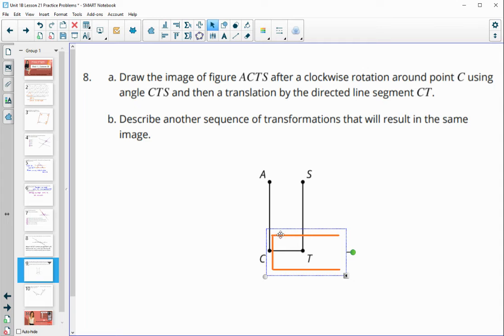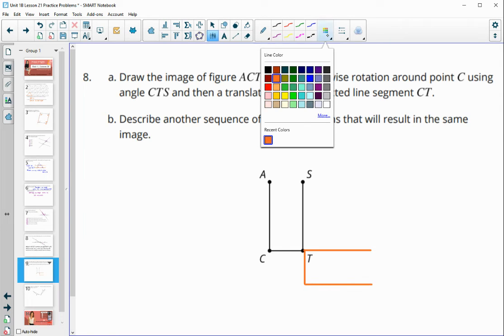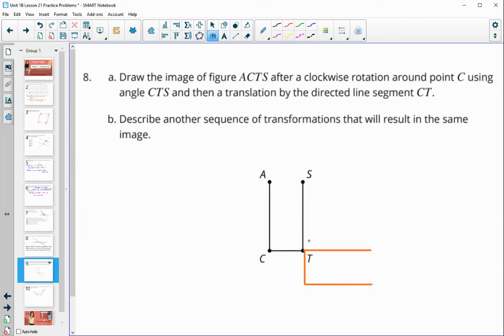And we're going to rotate using angle CTS. And then we're going to translate by CT. So then this would be our image. And then you probably just want to make sure that you label the points. So this one is C prime. This one is A prime, S prime, and T prime.